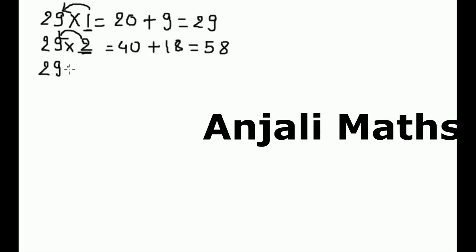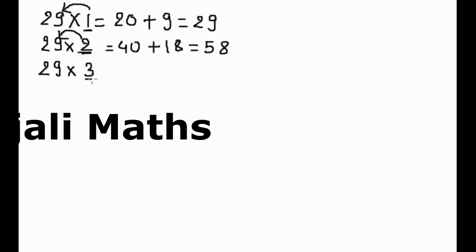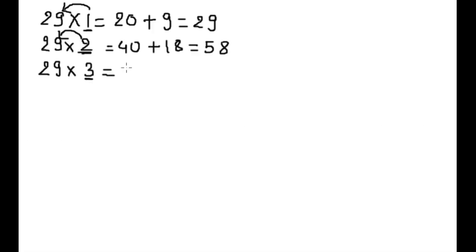29 into 3. Double of 3 is 6. Put 0 plus 9 into 3 is 27. 87.